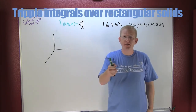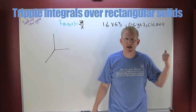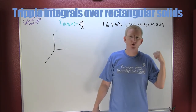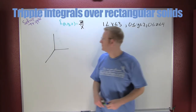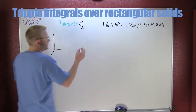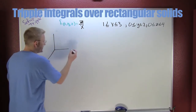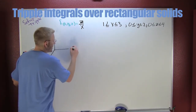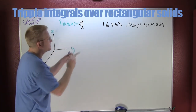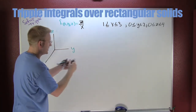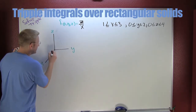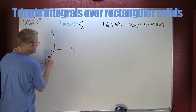The first thing you need to do in setting up these triple integrals is sketch your domain — the region that you're integrating over. In our usual orientation, this is x, this is y, and this is z. I see x going from 1 to 3.